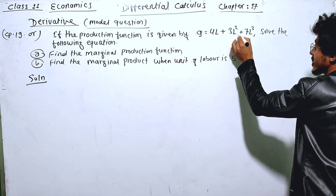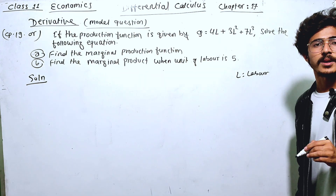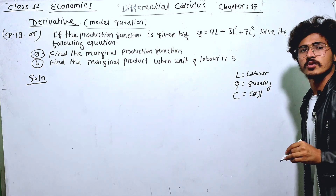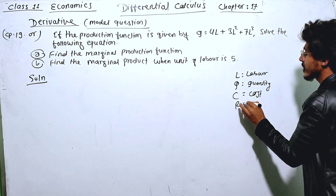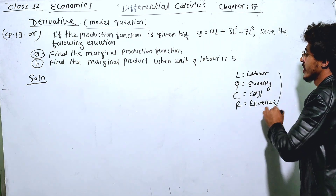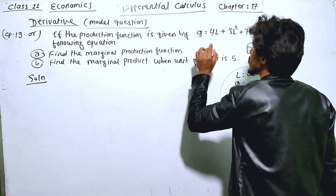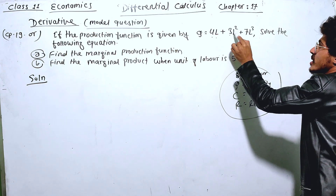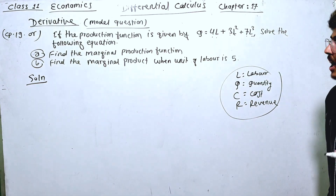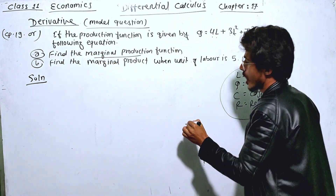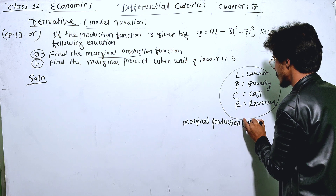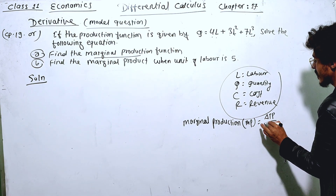First, Q is equal to 4L plus 3L squared. The marginal production function formula is: marginal production equals delta TP divided by delta Q.